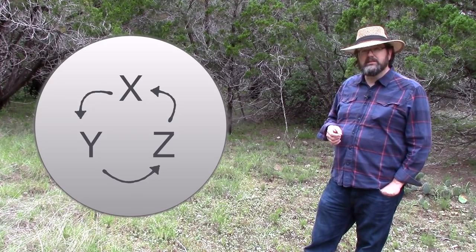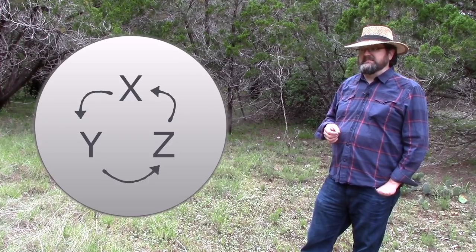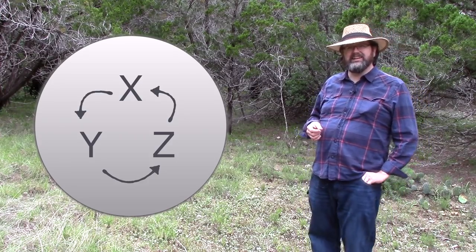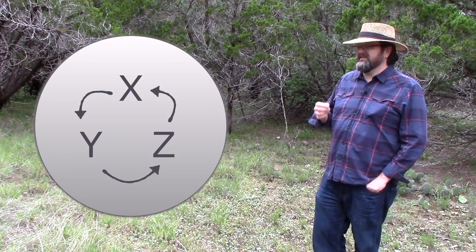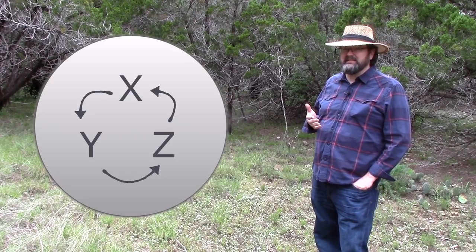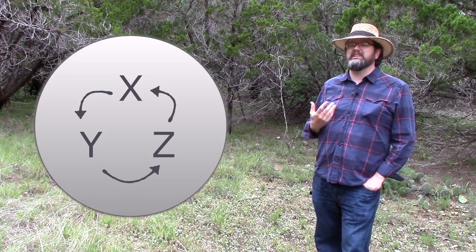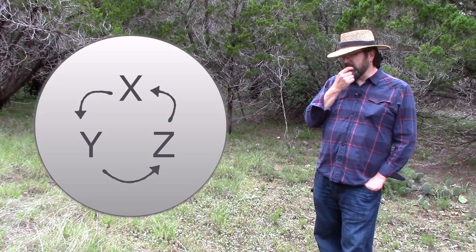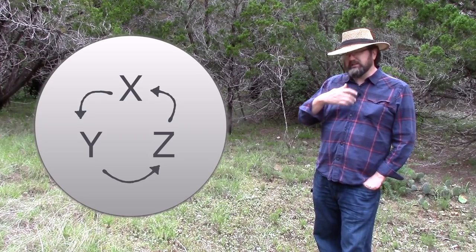Now you have everything defined or composed by something, but there's not one thing that composes all others, because X's are composed of Y's, Y's are composed of Z's, and Z's are composed of X's. Is that going to do it? Probably not. Trying to explain that or make coherent sense of that will be very difficult.